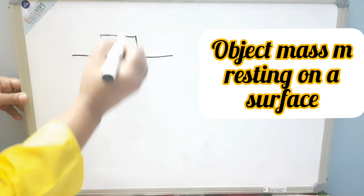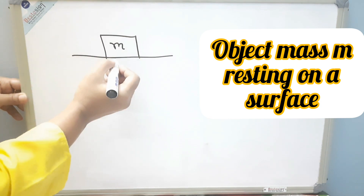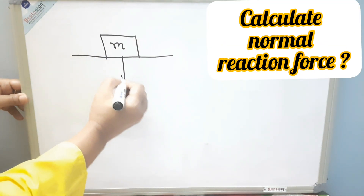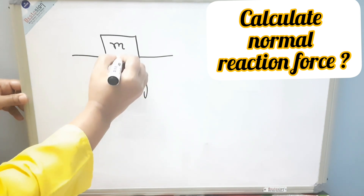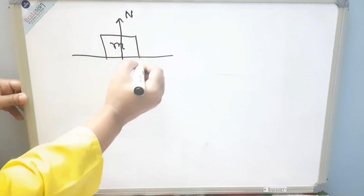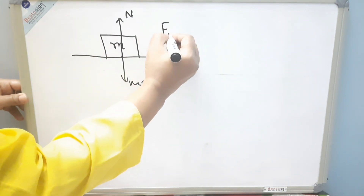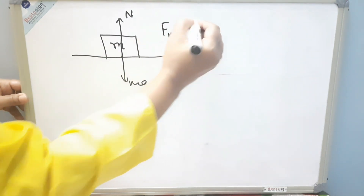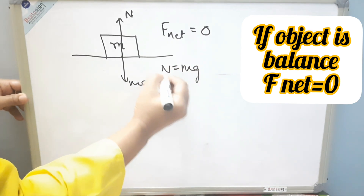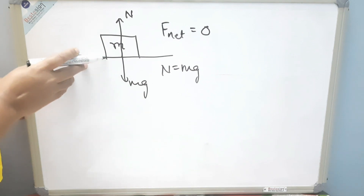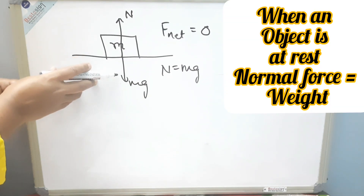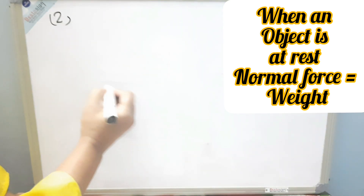For this first situation, we draw the forces: mg acts downward and opposite to that is N. This object is at rest, so f_net equals zero, which gives us N equals mg. So in any situation when the object is at rest on the surface, the normal reaction force will be equal to the weight of that object.